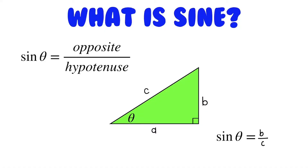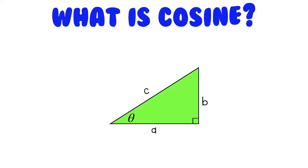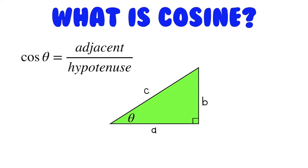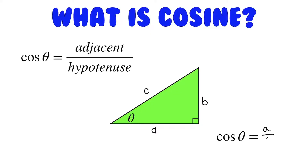What about cosine? The cosine of an angle in a right triangle is equal to the adjacent leg divided by the hypotenuse. The adjacent leg is the leg that touches the angle, so that would be a in this triangle. And the hypotenuse is c again. So the cosine of theta is a divided by c.